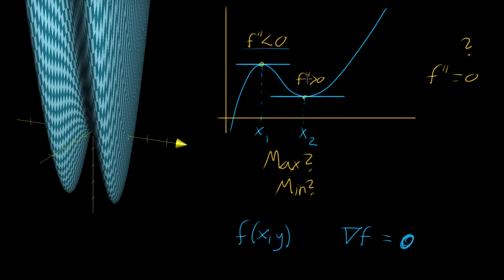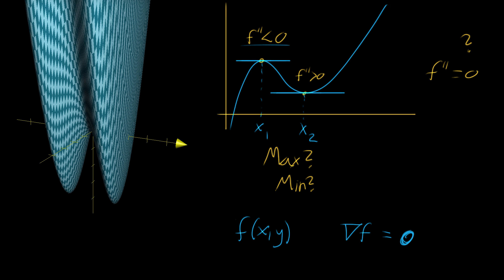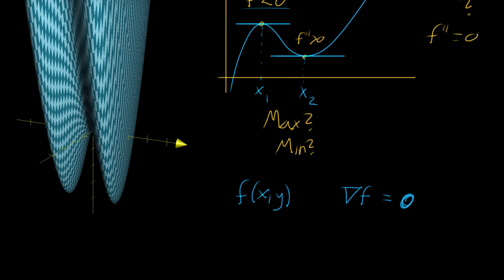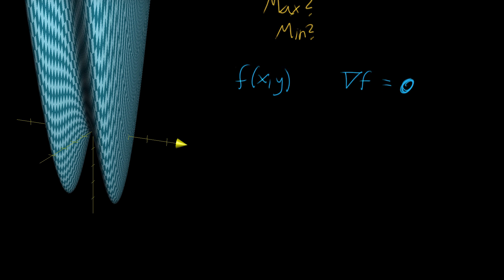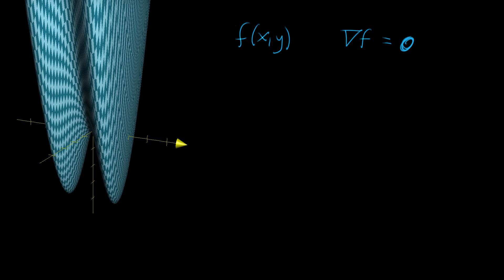There is a test called the second partial derivative test, and I'll get to the specifics of that at the very end of this video. But to set the landscape, I want to actually talk through a specific example where we're finding when the gradient equals 0, just to see what that looks like and to have some concrete formulas to deal with.